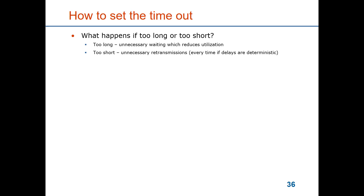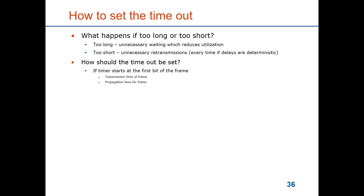How should the timeout be set to not be too long and not too short? Assuming the timer is set when the first bit of a frame is sent, it must include: the full transmission time of the frame; the propagation time from the sender to the receiver; the processing time at the receiver for error detection and generating an acknowledgement; the transmission time of the acknowledgement; and the propagation time of the acknowledgement back. All these components have to be included, and if there is any uncertainty in the estimates we should ensure the timeout is bigger than their sum.